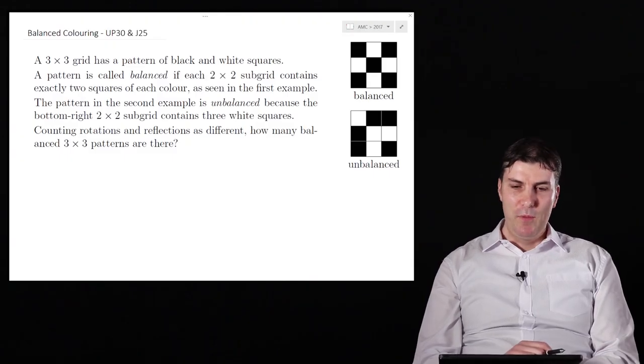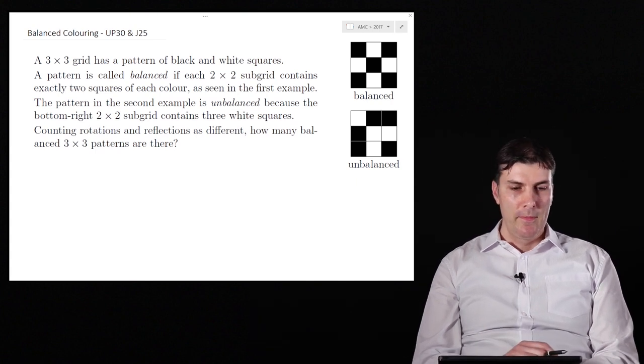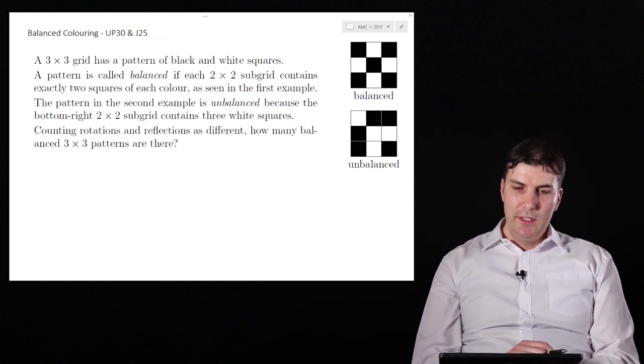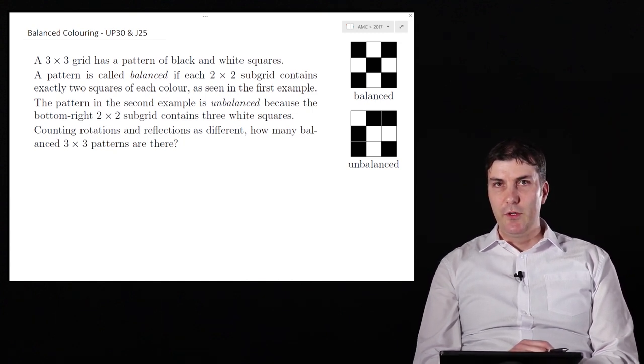A 3x3 grid has a pattern of black and white squares, so imagine a small black and white chessboard. A pattern is called balanced if each 2x2 subgrid contains exactly two squares of each color, as seen in the first example.